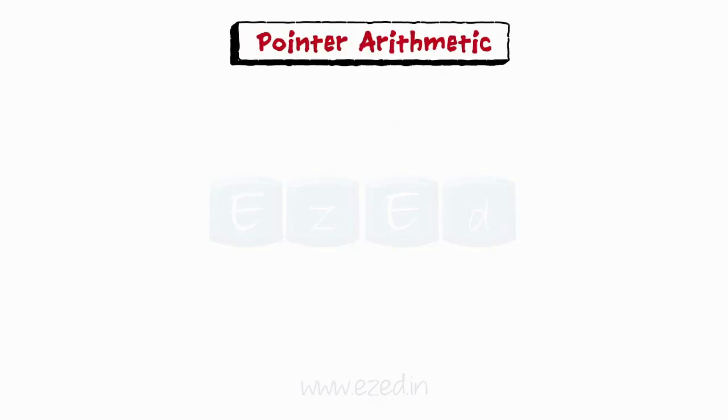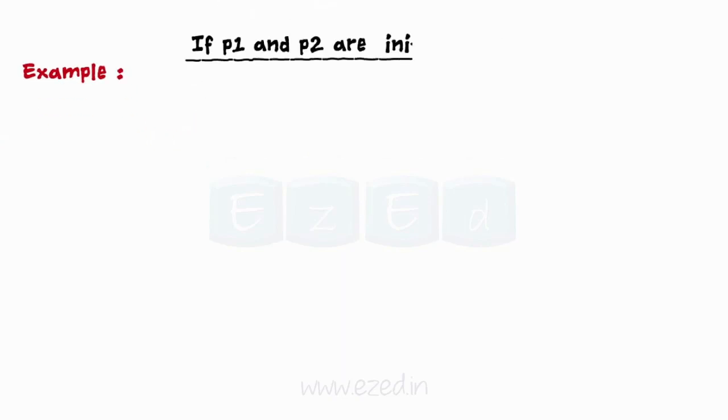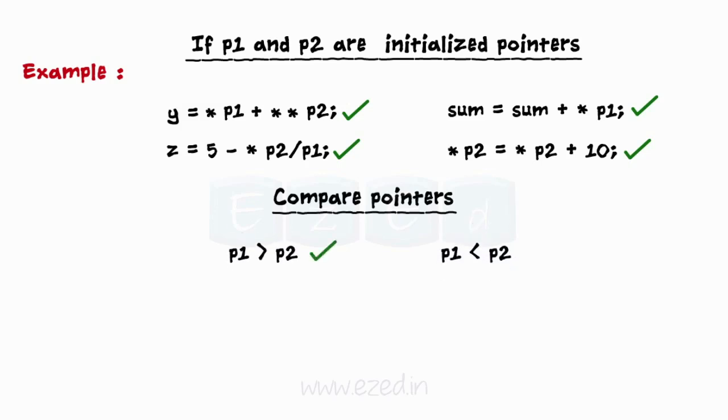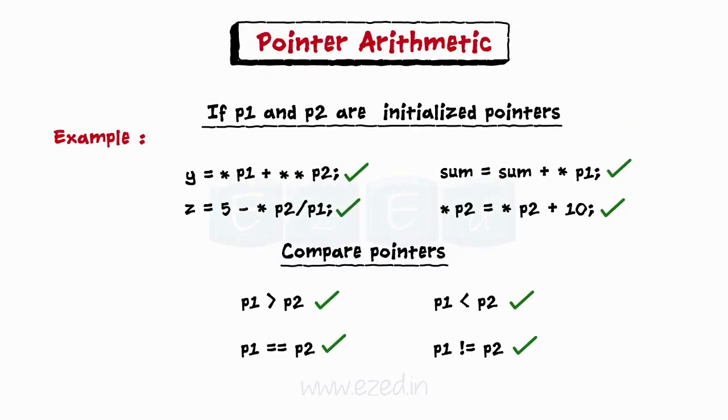Let us now try to understand the various arithmetic operations that can be carried out on pointers. Like other variables, pointer variables can be used in expressions. For example, if p1 and p2 are properly declared and initialized pointers, then the following statements are valid. We can also compare pointers by using relational operators. The expressions such as p1 greater than p2, p1 less than p2, p1 equal to p2, and p1 not equal to p2 are allowed.